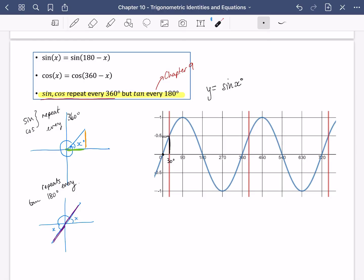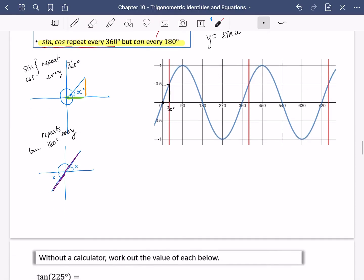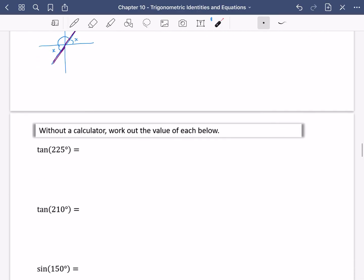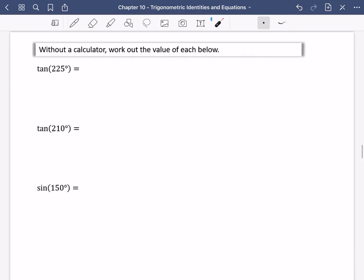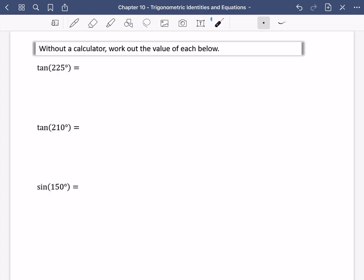So this is just a graphical representation of showing how often the sine and cos graphs repeat. If you remember the tan graph, it repeats every 180 degrees. So these three rules are going to be really useful. And what we're going to do in the next video is we're going to do some calculations without using a calculator.